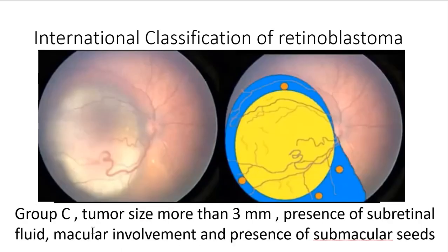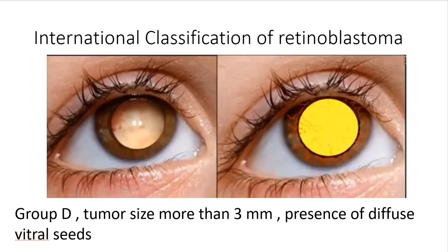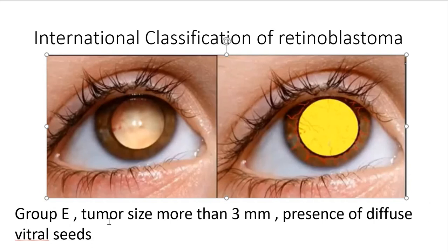Group C is a large tumor with subretinal fluid, possible macular and optic nerve involvement, and small subretinal seeds in close proximity to the tumor but not involving the vitreous. Group D shows seeds of retinoblastoma throughout the whole vitreous. In advanced tumors — Group E — there is a very large tumor with diffuse vitreous seeds that is really extensive and huge, requiring enucleation to treat the patient.